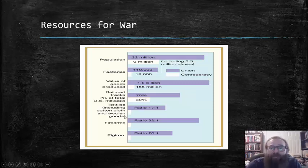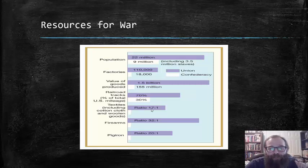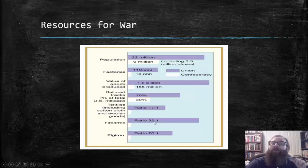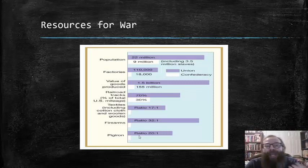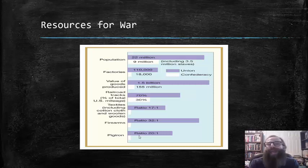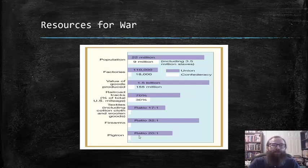As far as textiles, there was a 17 to 1 ratio when it came to cotton cloth and woolen goods. For firearms, there was a 32 to 1 ratio with the Union advantage in availability. And pig iron, the raw material used to make things like cannon, the Union had an advantage of a 20 to 1 ratio. The Union's economic output was about 1.5 billion valuation versus about 155 million for the Confederacy. All in all, the Union's access to resources was far greater, which would prove to be a deciding factor in the war.